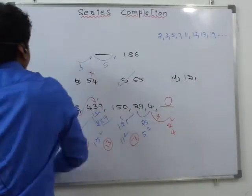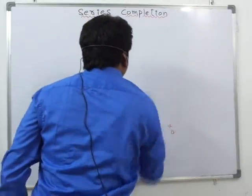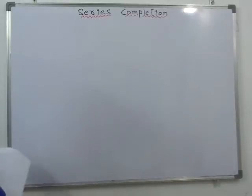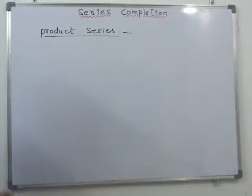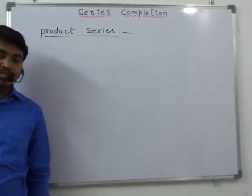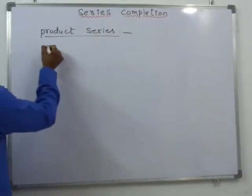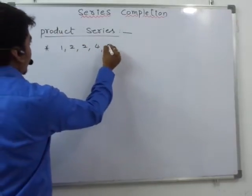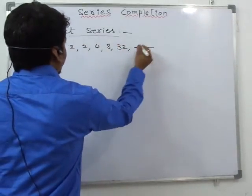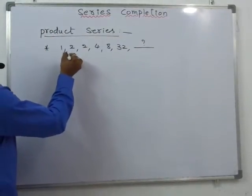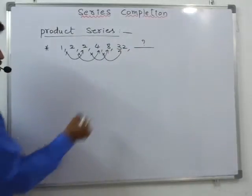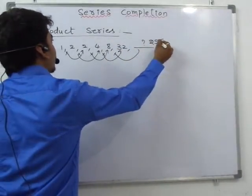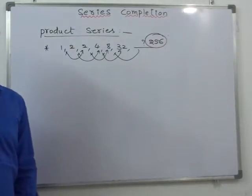The second type of series is the product series. Numbers in a series can be a multiple of some constant or multiples of previous numbers. For example: 1, 2, 4, 8, 32 — each number multiplied by 2 gives the next, so the next number is 256.